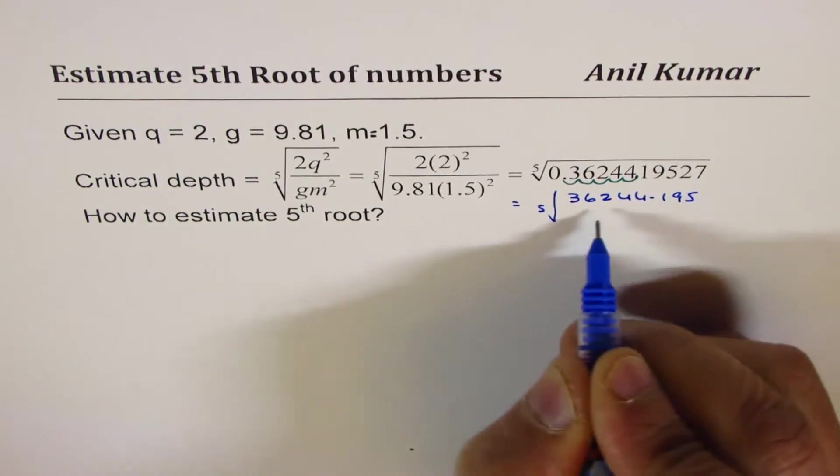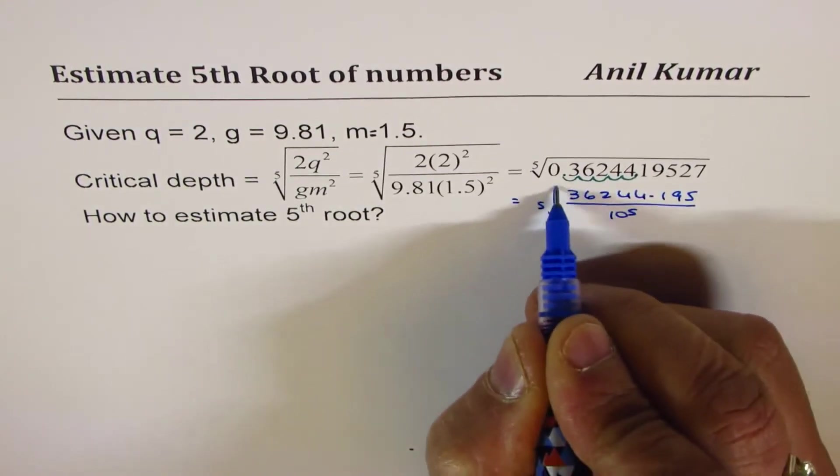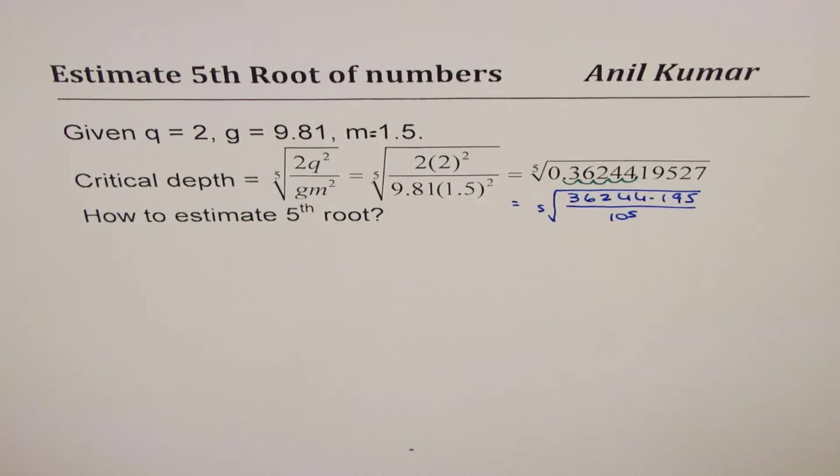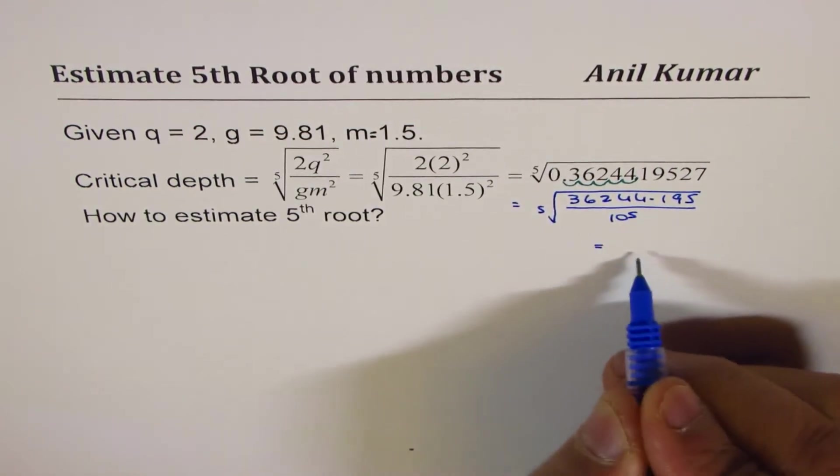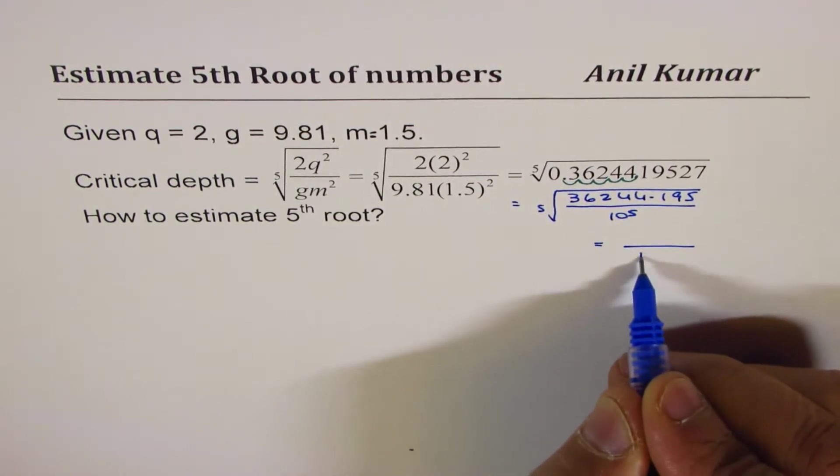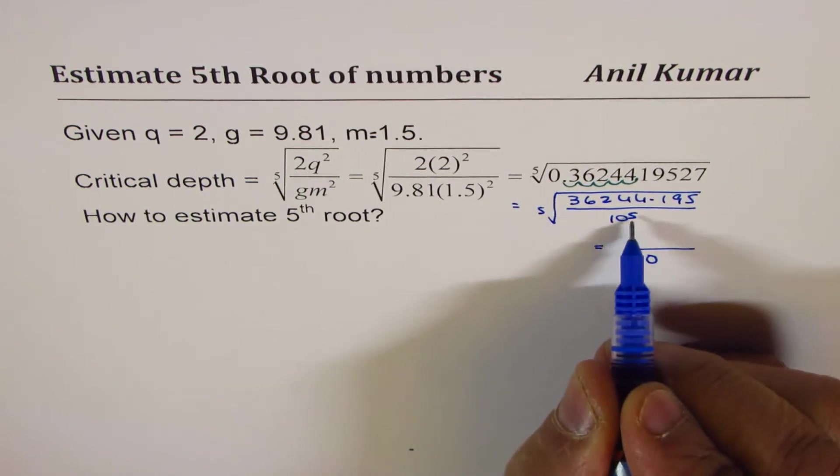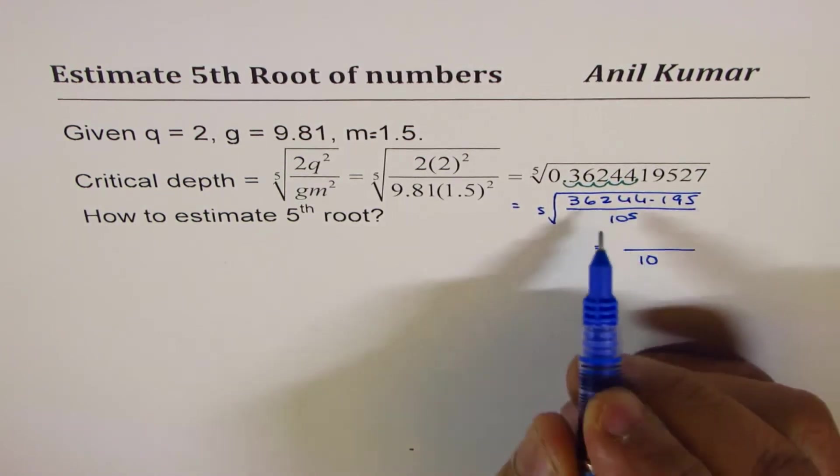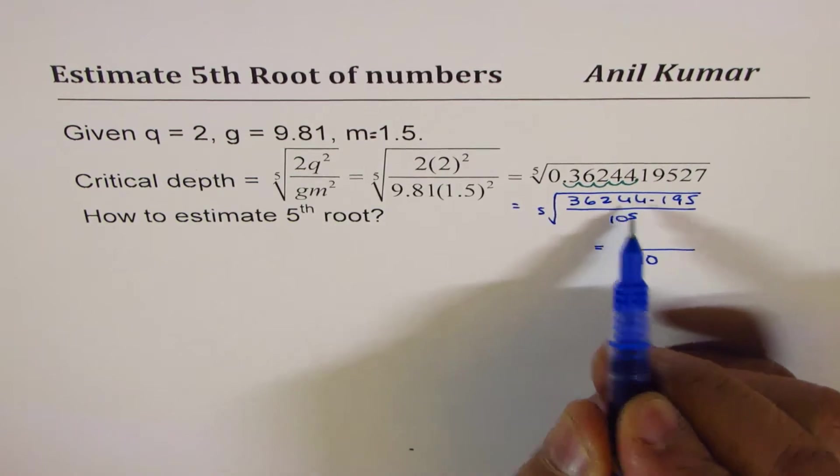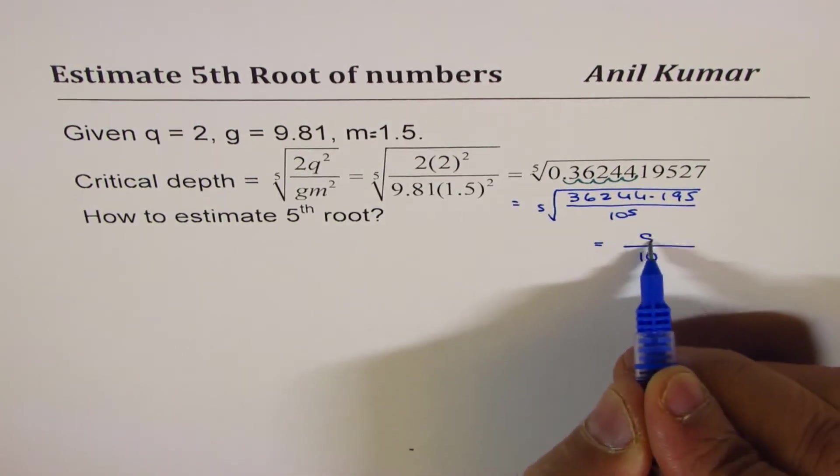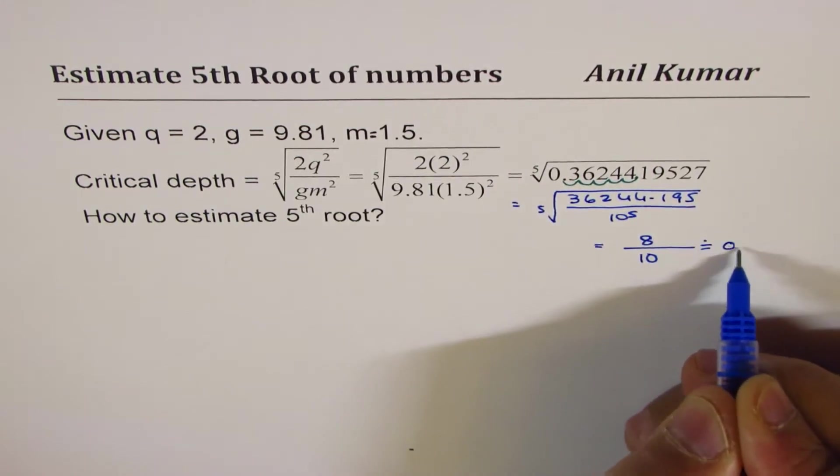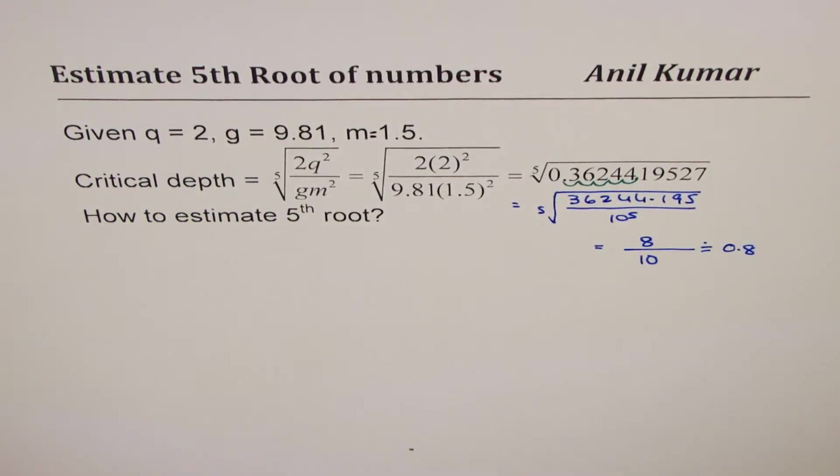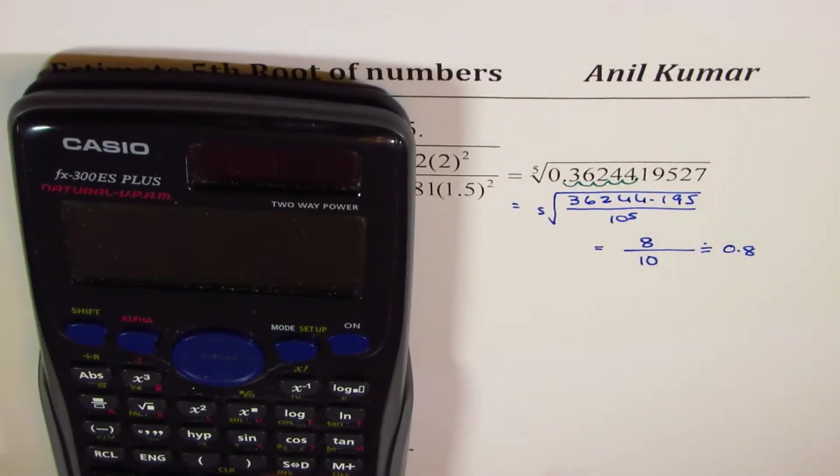Always when you have to find the fifth roots, you could say this is equal to something divided by 10, since fifth root of 10 to the power of 5 will be this, and 8 to the power of 5 is this number. So you'll get 8 divided by 10, so we could estimate this to 0.8, since you know what 8 to the power of 5 is.